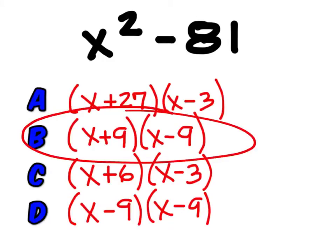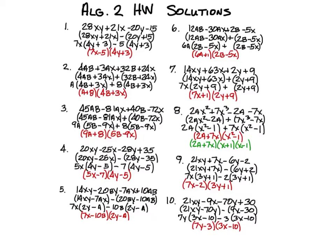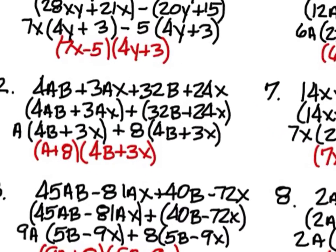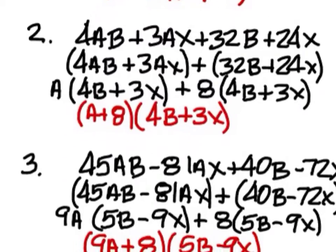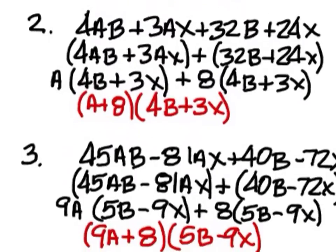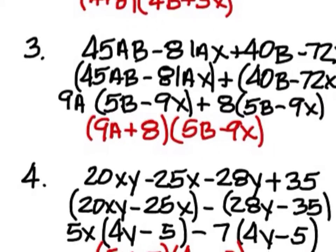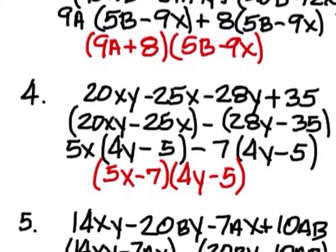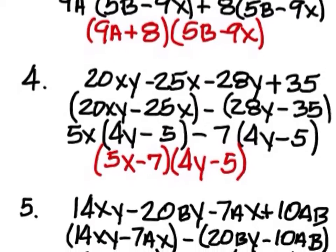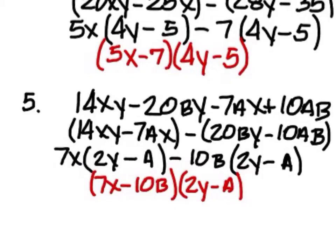Here's a quick multiple choice — just the block letter is all I need. The answer to this one should be B. Here are the homework answers for Collins and Allen: number one is 7x minus 5 and 4y plus 3; two is a plus 8 and 4b plus 3x; three is 9a plus 8 and 5b minus 9x; four is 5x minus 7 and 4y minus 5; five is 7x minus 10b and 2y minus a.